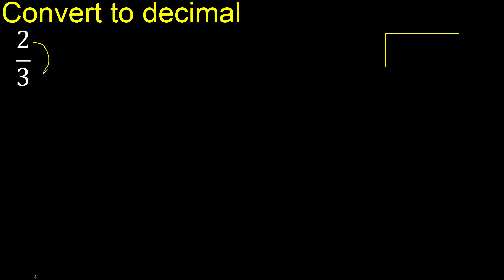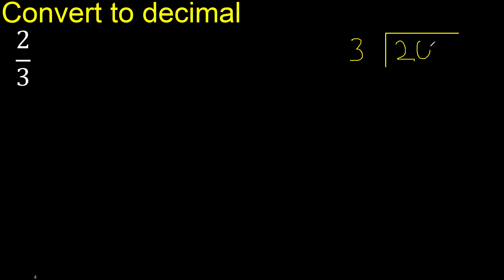2 divided by 3. 2 is less, therefore complete — always complete with 0. Here, 0 point 20 is not less.